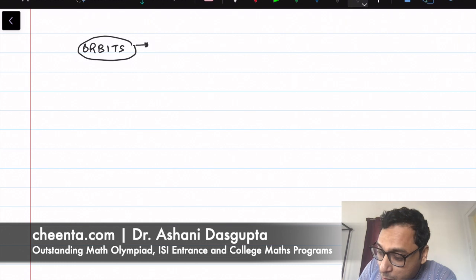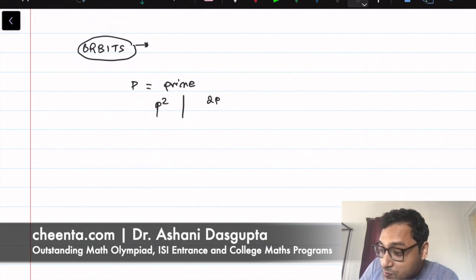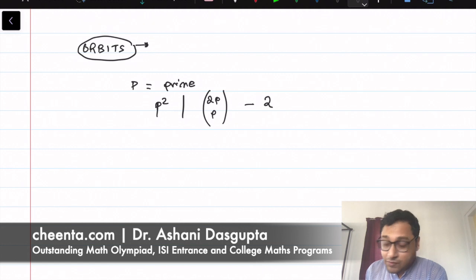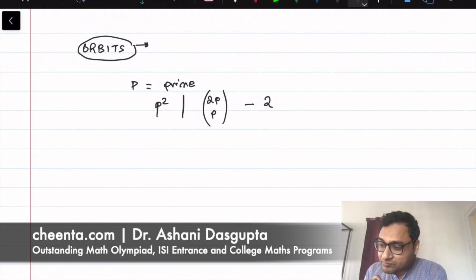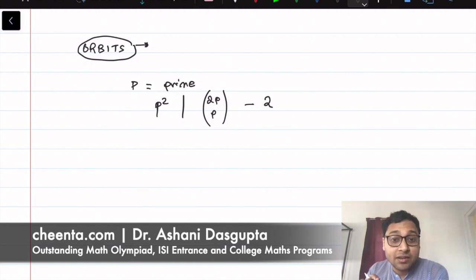We were working with a problem which said that if p is a prime number, then p² divides 2p choose p minus 2. We want to show this — this is our goal. In the last two videos, the link is in the description, you can watch those two videos before watching this one. We reinterpreted this particular number theory problem in a more geometric manner.